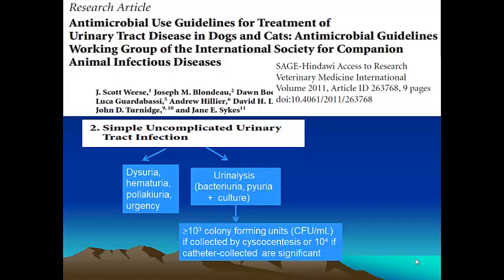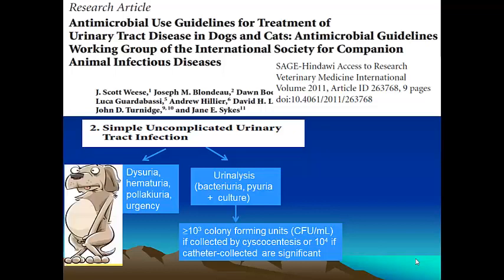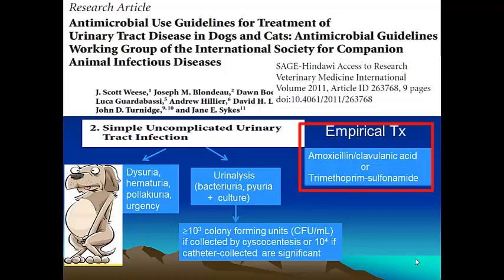Without clinical signs, we call it subclinical infection, which does not warrant treatment. Clinical signs include dysuria, pollakiuria, painful urination, blood in the urine, urgency to urinate, and vocalization. You need both clinical signs and a positive culture to diagnose a urinary tract infection deserving treatment. Empirical first-line choices include amoxicillin-clavulanic acid or a trimethoprim-sulfa drug. With a sensitivity test, you can reassess whether that empirical treatment remains appropriate.